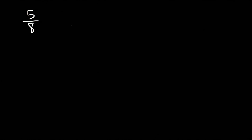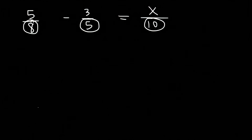In this lesson we're going to focus on solving rational equations. Let's start with our first example: 5 over 8 minus 3 over 5 equals x over 10. What do we need to do in order to find the value of x? The best thing we can do is clear away all fractions. We have an 8, a 5, and a 10. What is the least common multiple of 8, 5, and 10?